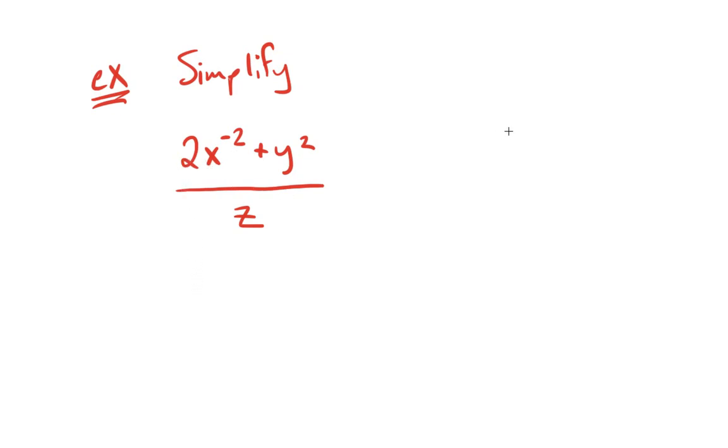2 times x to the negative 2 - hopefully we already know by now that a negative exponent is the same as a positive exponent, just on the opposite side of a fraction bar. You may not think this looks like a fraction right now, but you can always imagine something as a fraction over 1.